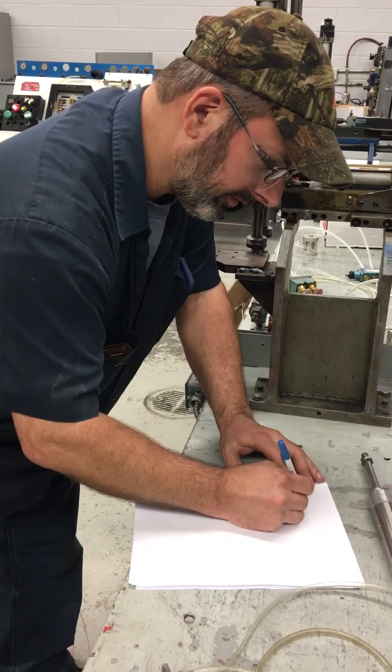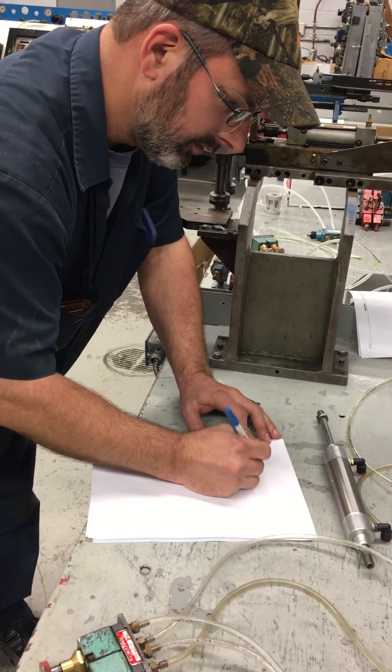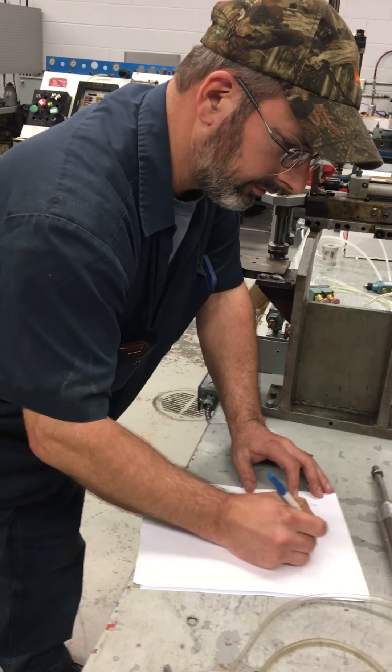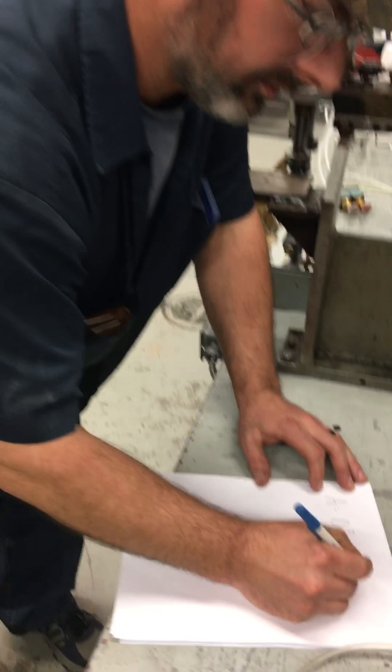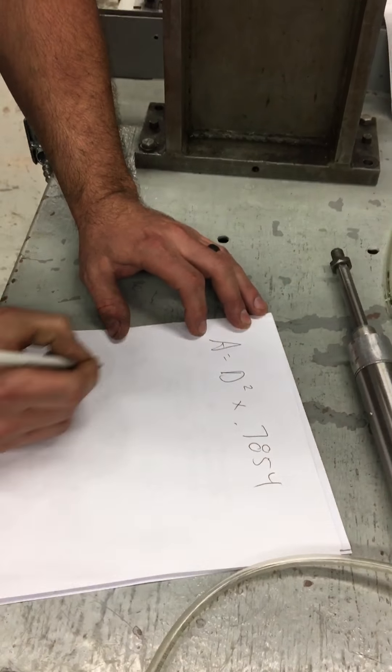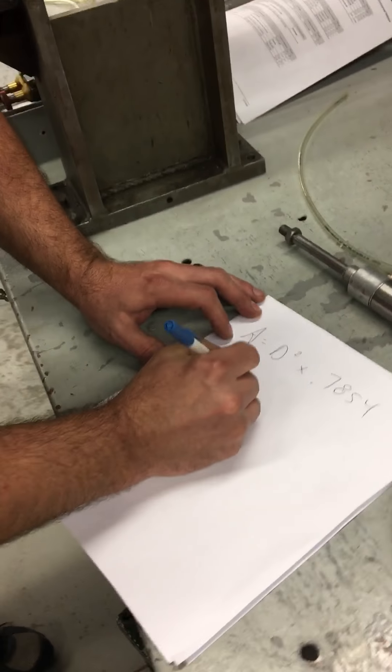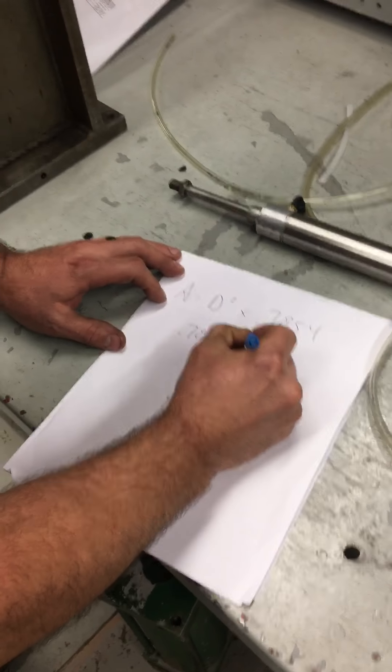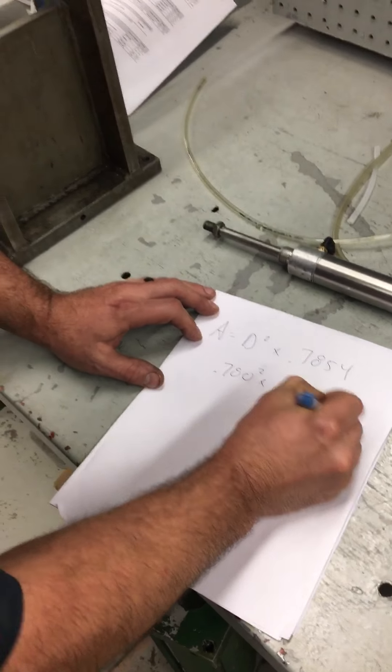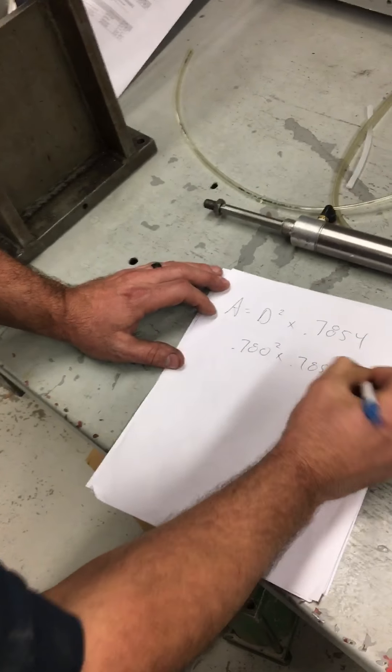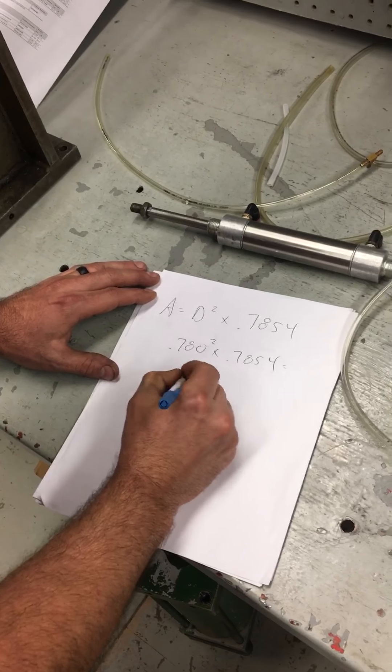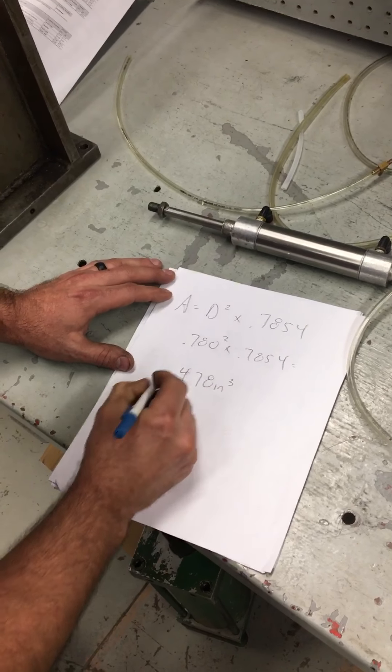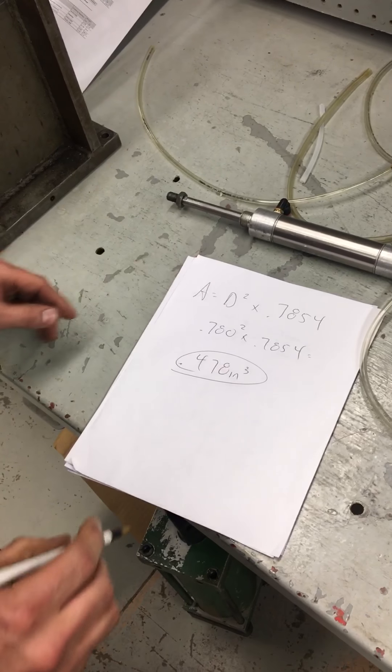So we know what area is equal to: diameter squared multiplied by 0.7854. So we know what our diameter is. That is 0.780 squared. So we came up with an answer of 4.78 inches cubed. Okay, that takes care of our area for our piston.